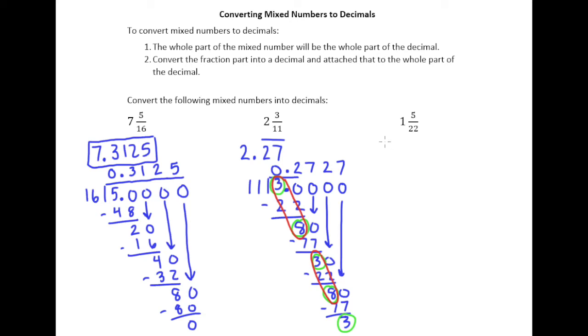So now let's look at 1 and 5 twenty-seconds. So I understand I'm going to have 1 point something, and we'll go ahead and start dividing here. So 22 does not go into 5, of course. So put my decimal there, put my 0 there. 22 goes into 50 twice. We have 44, get a remainder of 6, add a 0, drop it down. 22 goes into 60 again, just twice.